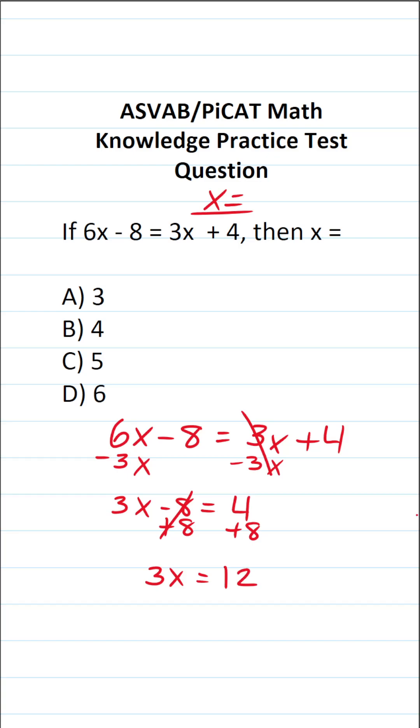And finally, to get x by itself, we're going to divide both sides of this equation by 3. In doing so, this says x equals 12 divided by 3, which is 4. So we know x equals 4, so the correct answer is B.